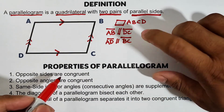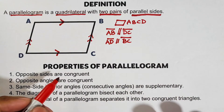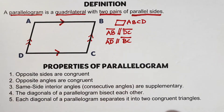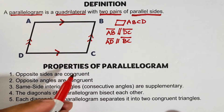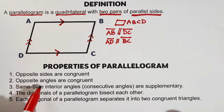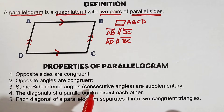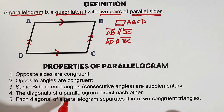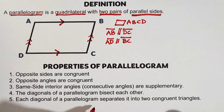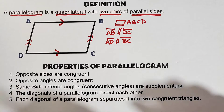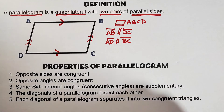This is the definition of a parallelogram as a quadrilateral with two pairs of parallel sides. Throughout this video we will talk about the properties: first, opposite sides are congruent; second, opposite angles are congruent; third, consecutive angles are supplementary; fourth, the diagonals bisect each other; and lastly, each diagonal separates the parallelogram into two congruent triangles.